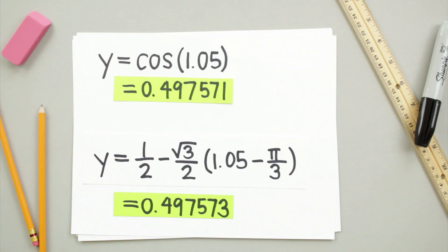If the y output of the second equation is easier to find than the first, and the two answers are close enough, why wouldn't we just use the second equation?